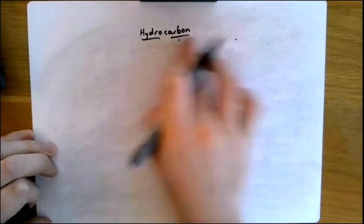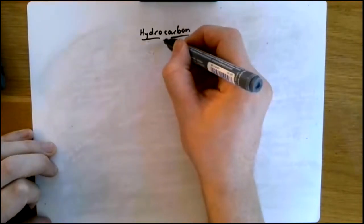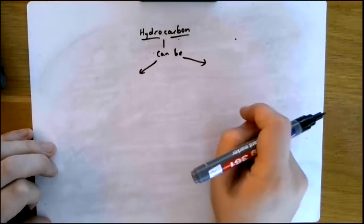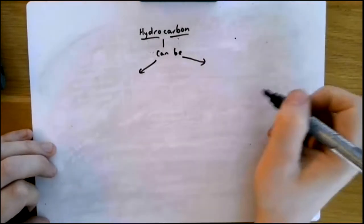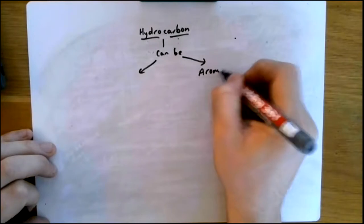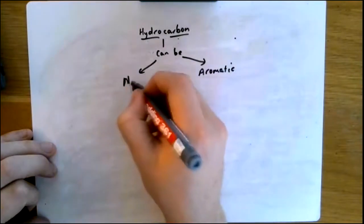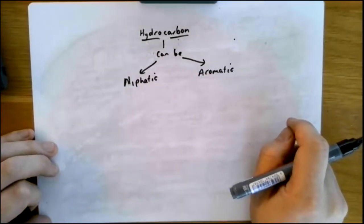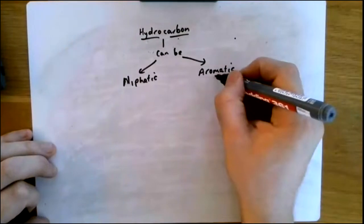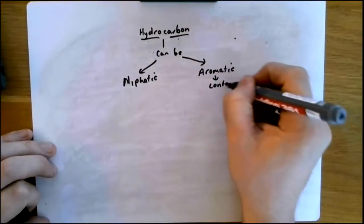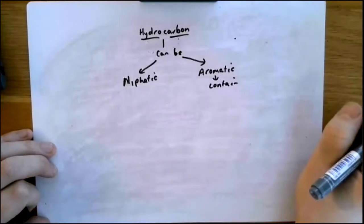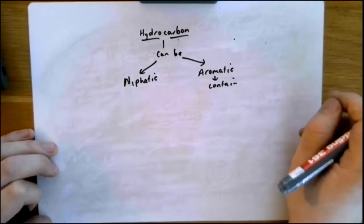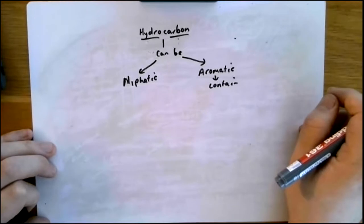Types of hydrocarbons — we had two main families of hydrocarbons. What were those two groups? I'm hoping that you said aromatic or aliphatic. Aromatic contains a special structure — I hope you said benzene ring. I want you to pause the video and on a rough piece of paper sketch down what a benzene ring looks like. Do that now please.